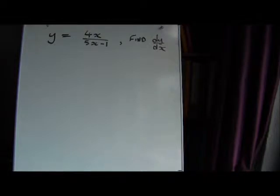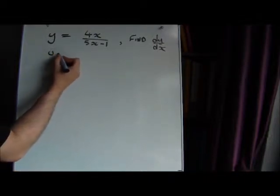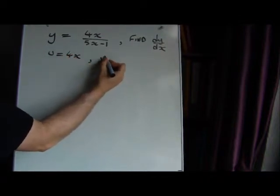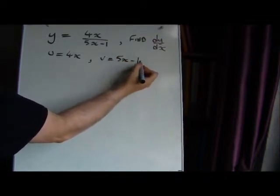So we're going to break this down into the numerator and denominator. We're going to let the numerator be the 4x part and the denominator, the bottom of the fraction, is going to be 5x minus 1.